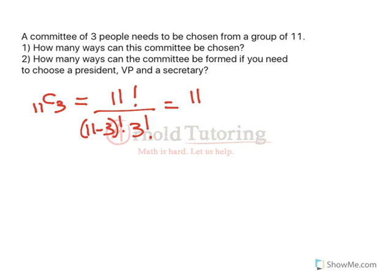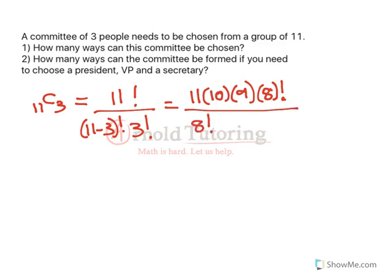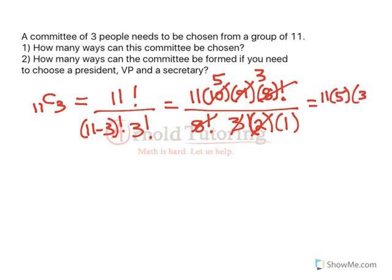We can simplify most of this. The numerator is 11 times 10 times 9 times 8 factorial, and the denominator is 8 factorial times 3 factorial. So we can cancel the 8 factorials. Then 3 factorial is 3 times 2 times 1, so 9 over 3 is 3, and 10 over 2 is 5. We end up with 11 times 5 times 3, which equals 165. So there are 165 ways we can choose a group of 3 from a group of 11.